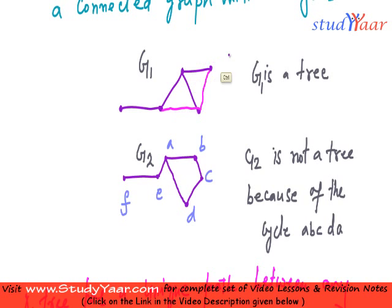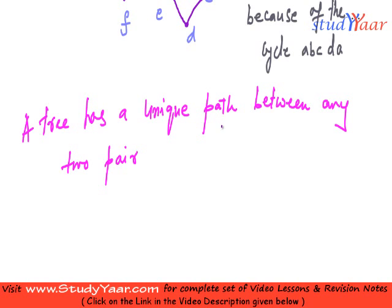This particular cycle. Therefore, we say, in a tree, we always have a unique path between any two or between any pair of vertices. A pair in itself is two vertices, between any pair of vertices.